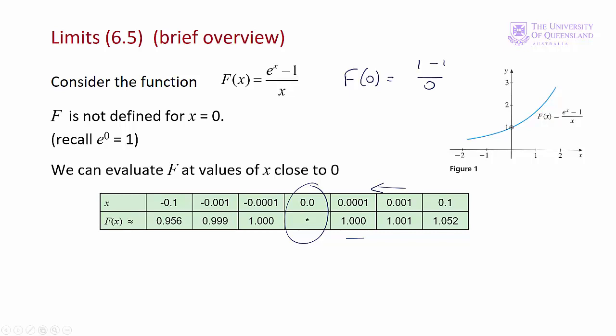The same applies when we approach 0 from below. That is, our function (e^x - 1) / x approaches 1 as x approaches 0. More formally, in terms of limits, the limit of our function as x approaches 0 is equal to 1. So limits tell us what happens to a function as we approach a certain value of the variable — in this case x.